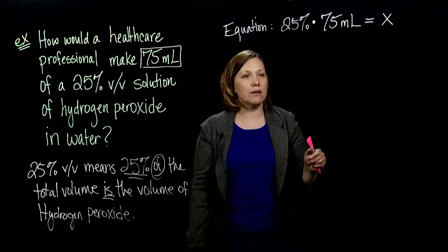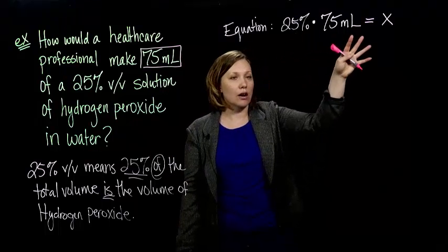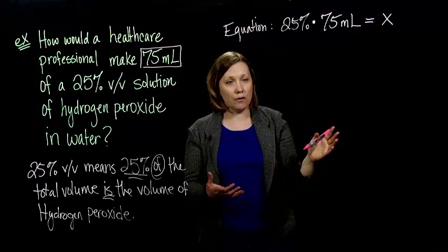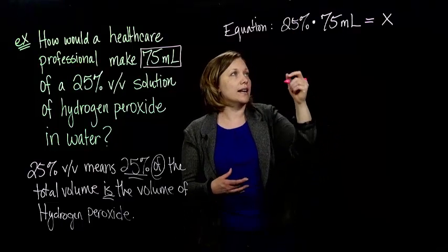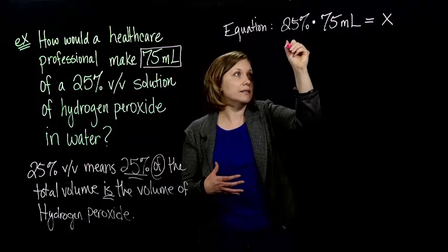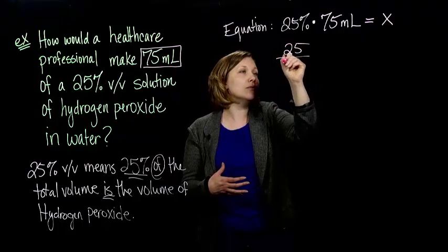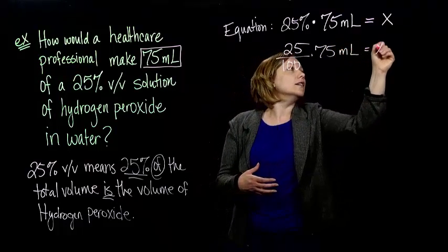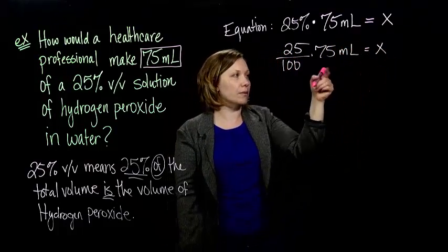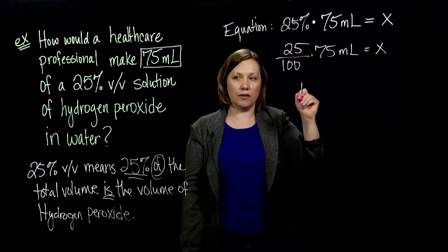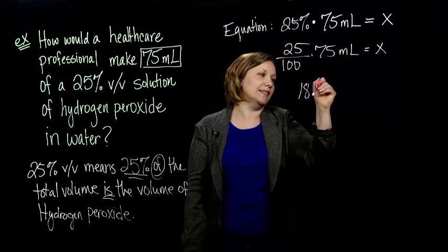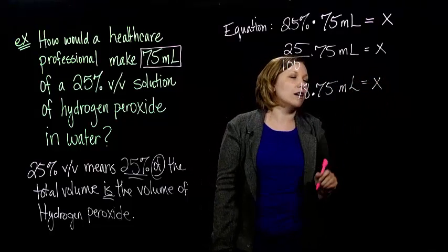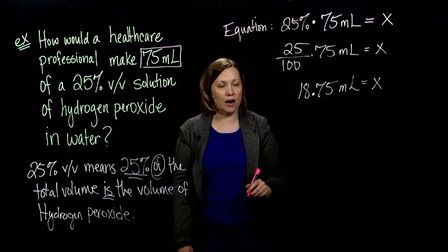So 25% times 75 milliliters. We can solve this a couple of different ways. You can write 25% as 25 over 100, or you can write it as a decimal. Either way, I like fractions, you might like decimals. It doesn't matter, you'll get the same answer. And then when we reduce this, you end up with 18.75 milliliters. This is our volume of hydrogen peroxide.